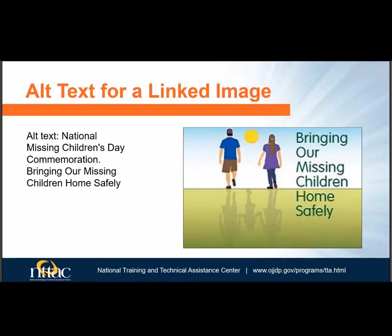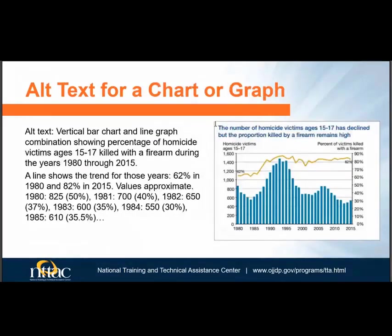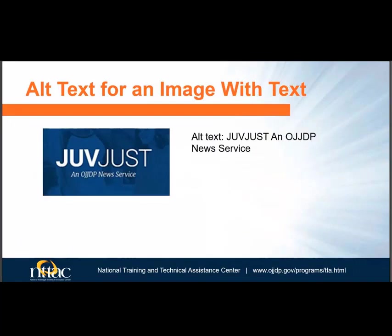In an image that links to the National Missing Children's Day Commemoration website, that destination must be included in the alt text. Note that the word 'link' should not be used because the screen reader will announce it as a link. Organizational and flowcharts need not only the text of the chart in the alt text, but also the relationships — for instance, who reports to whom. Charts and graphs need extensive alt text including all data points, and it is best if a subject matter expert writes it. Images with text such as logos can be given alt text of whatever text is in the image. If a logo is repeated on every page, it only needs to be described once in the document.